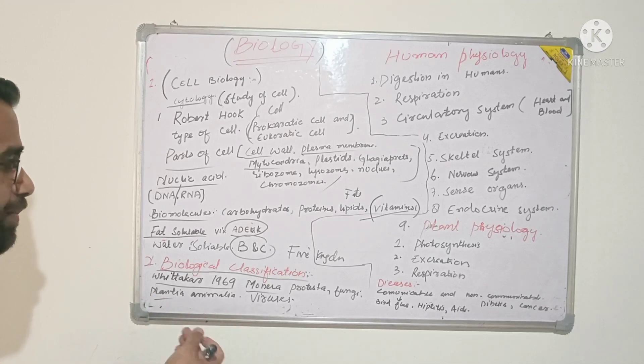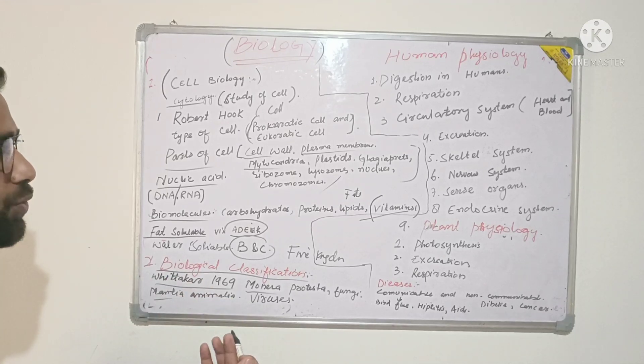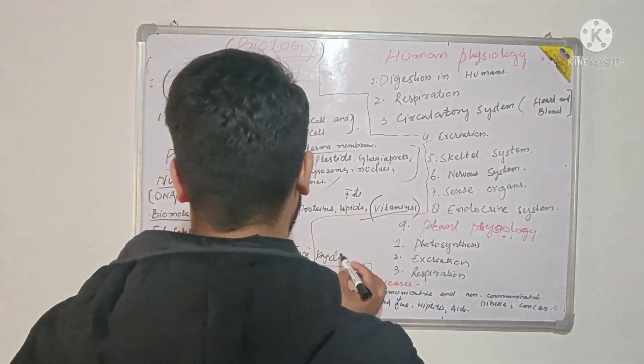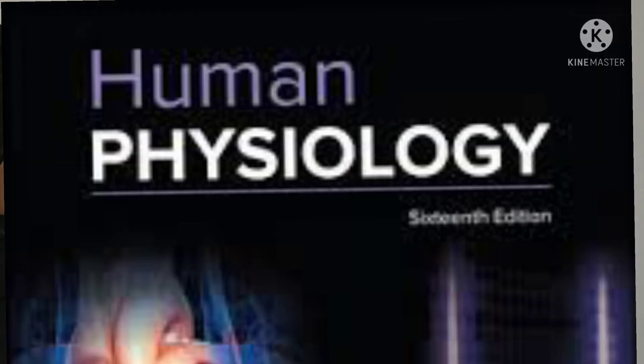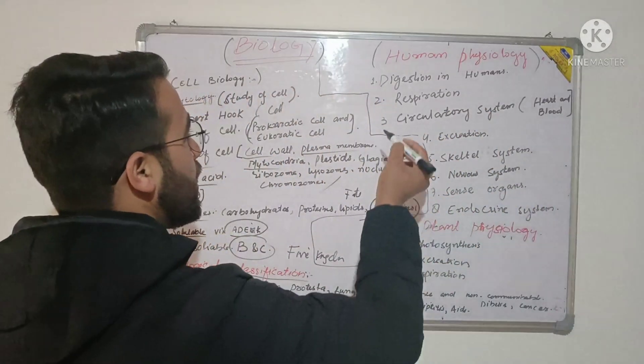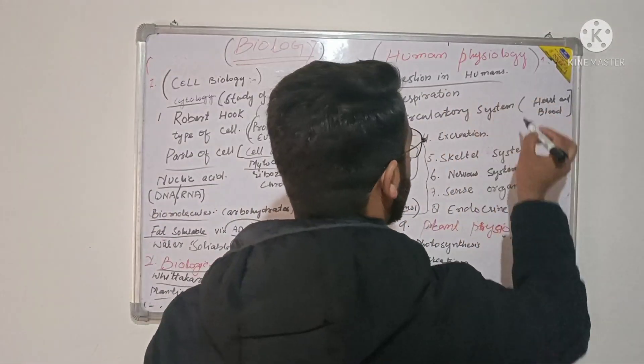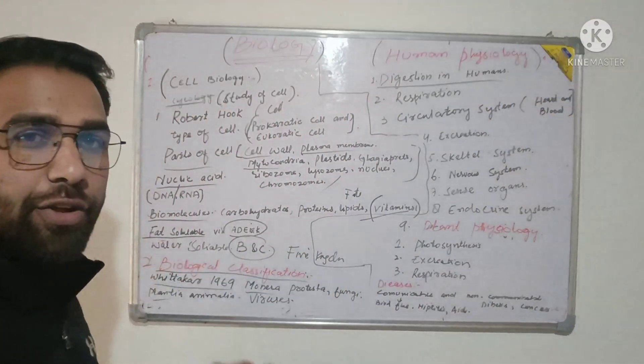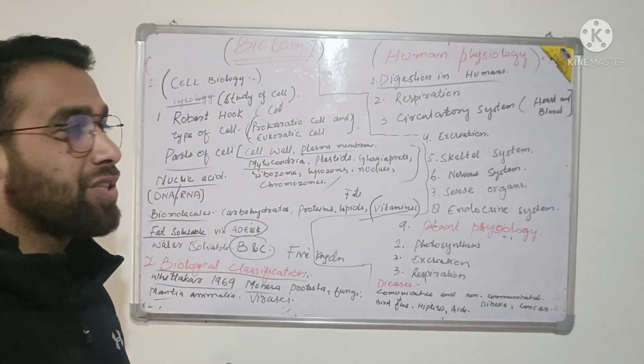Then after biological classification is human physiology. Here you would study about the different systems in humans. First, you will study about digestion in humans. You will study about nutrition, called heterotrophic nutrition.